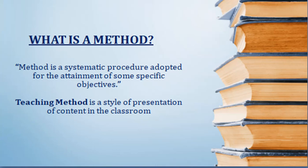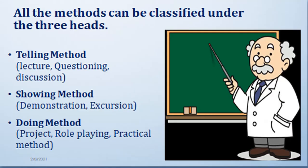Starting with the definition of method: a method is basically a systematic procedure adopted to attain some specific objective. It is the name of any approach used to achieve a specific goal. If we talk about the teaching method, it is the style of presentation of content in the classroom — the method used to impart knowledge to students. Methods are divided into three parts: telling method, showing method, and doing method.